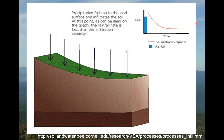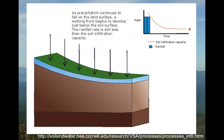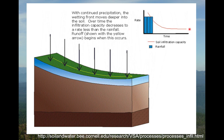This animation sequence, created by Todd Walter and his group at Cornell, illustrates the process. We have a soil being rained on — the blue column represents rain rate and the red line is infiltration capacity. At first, rain rate is less than infiltration capacity, so all water soaks in. But as rain continues, infiltration capacity declines over time, and water starts to pond on the land surface, then runs downhill — that's the beginning of infiltration excess overland flow.